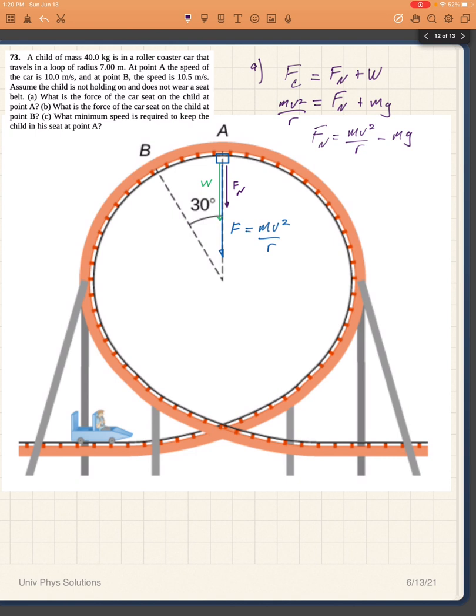And since we are given the speed at point A to be equal to 10 meters per second, and we are given the mass of the child to be 40 kilograms, we also know g to be 9.8 meters per second squared.